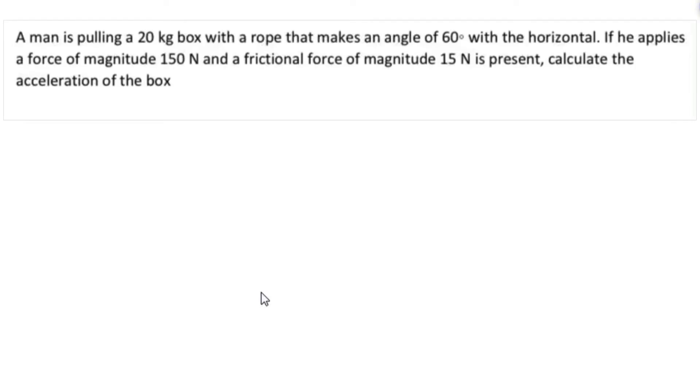Hi there and welcome back. Let us look at this example here. It is Newton's law related. We are told that a man is pulling a 20 kilogram box with a rope that makes an angle of 60 degrees with the horizontal. If he applies a force of magnitude 150 newtons and a friction force of magnitude 50 newtons is present, calculate the acceleration of the box.